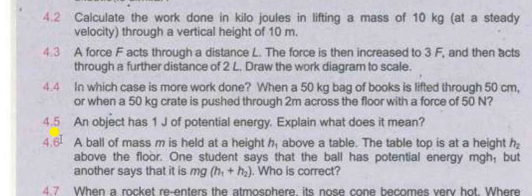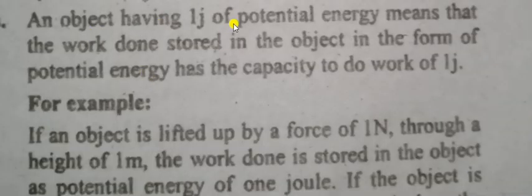Next is question 4.5: An object has one joule of potential energy. Explain what does it mean. The answer is: an object having one joule of potential energy means that the work stored in the object in the form of potential energy has the capacity to do a work of one joule.